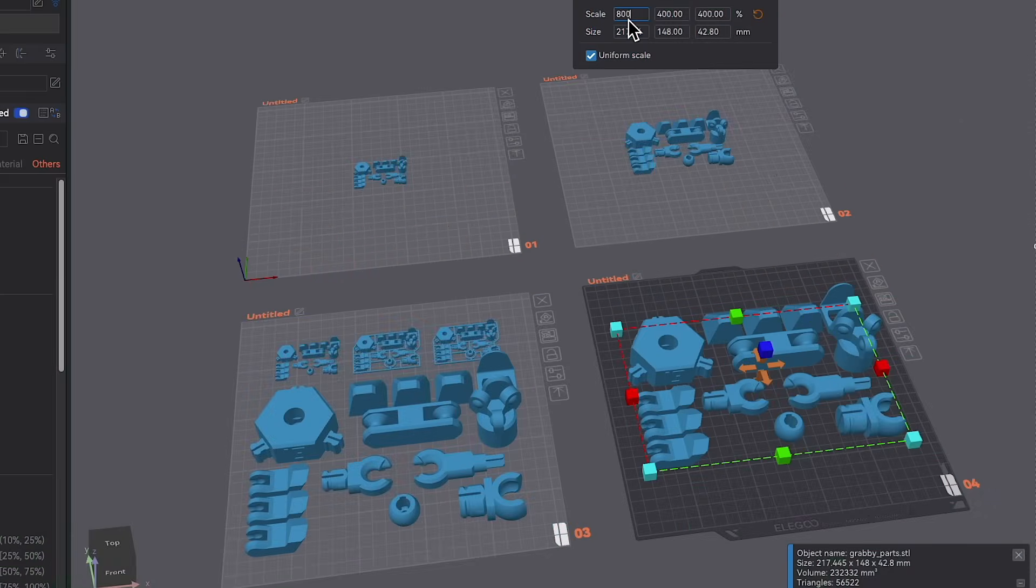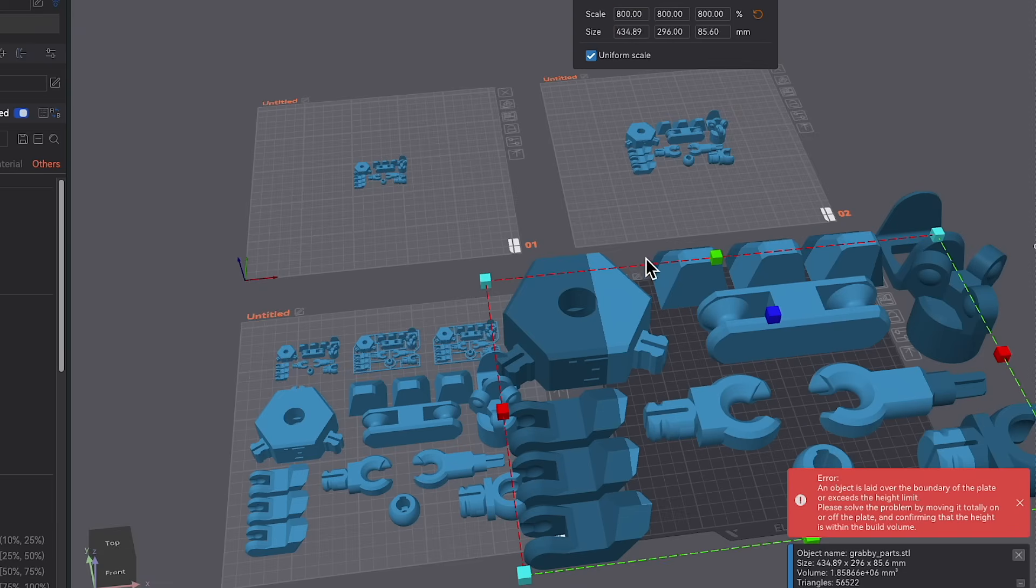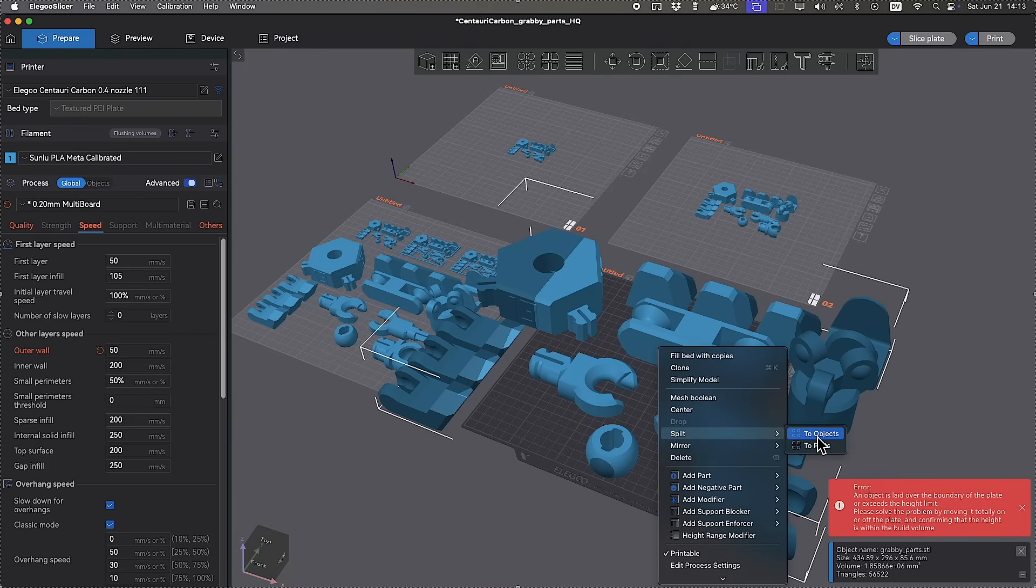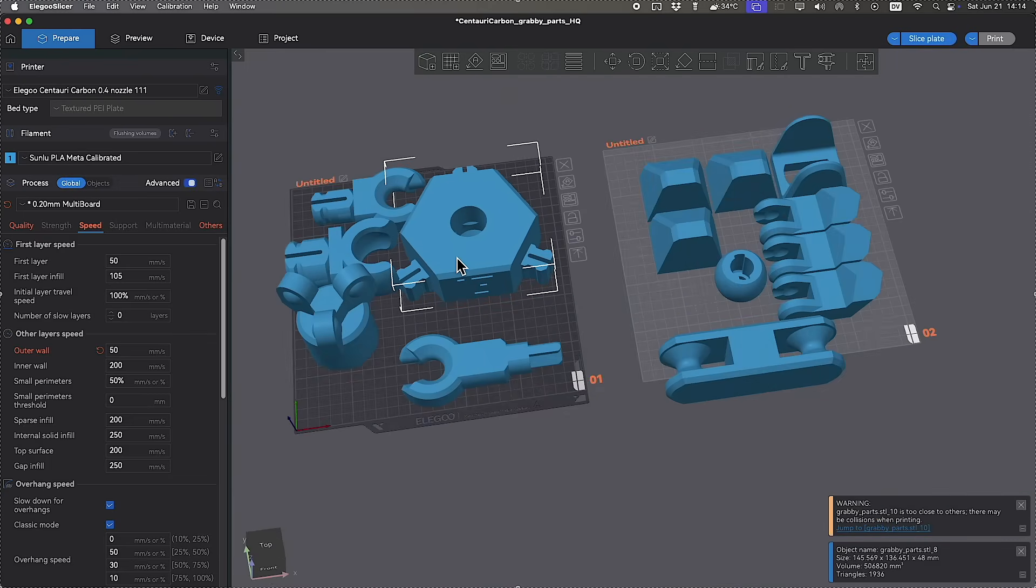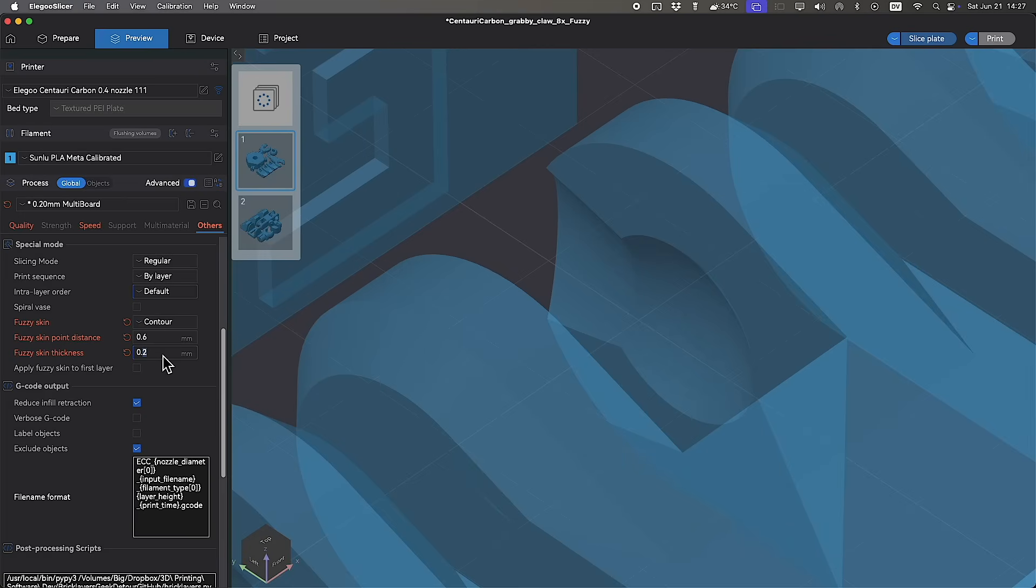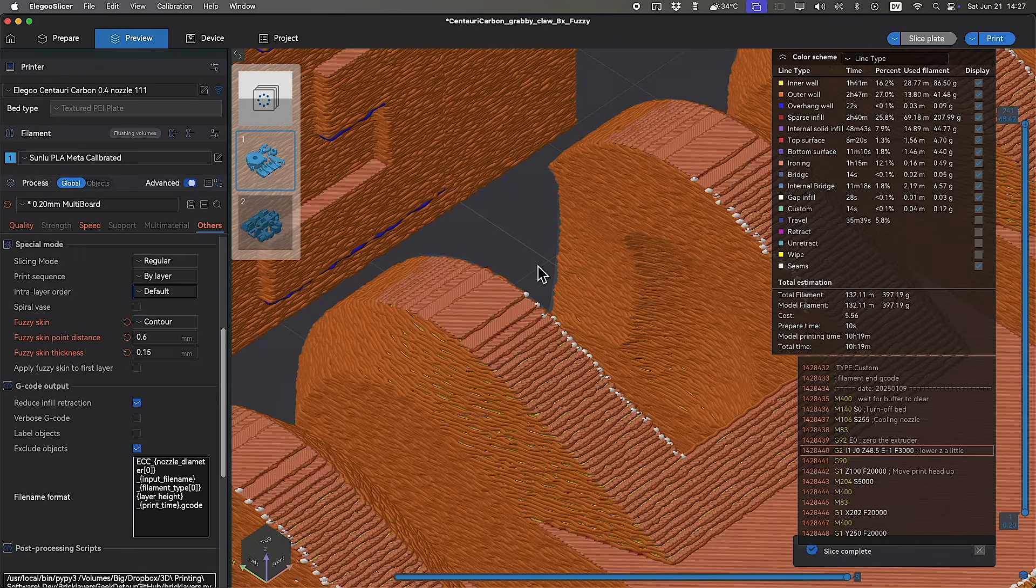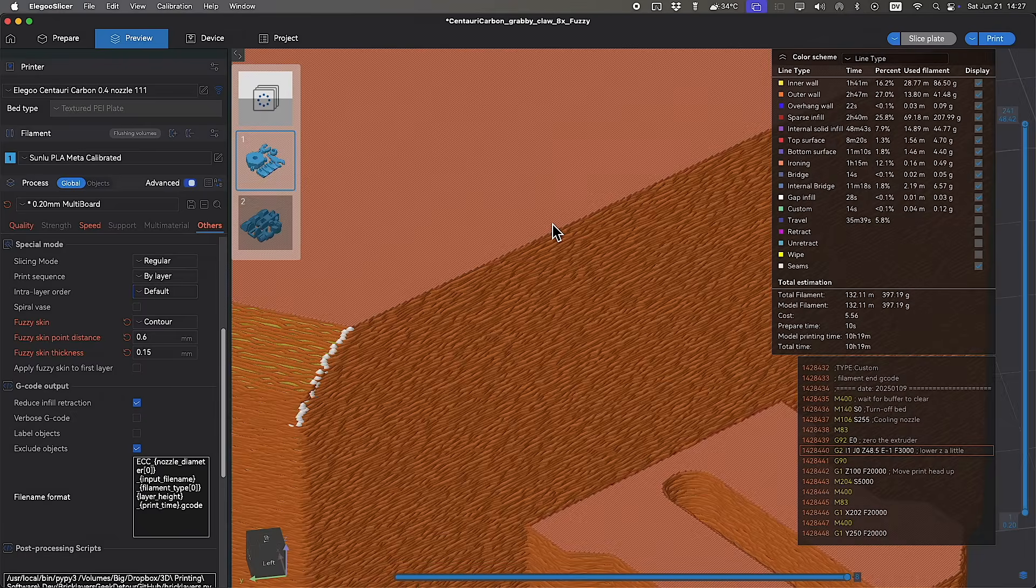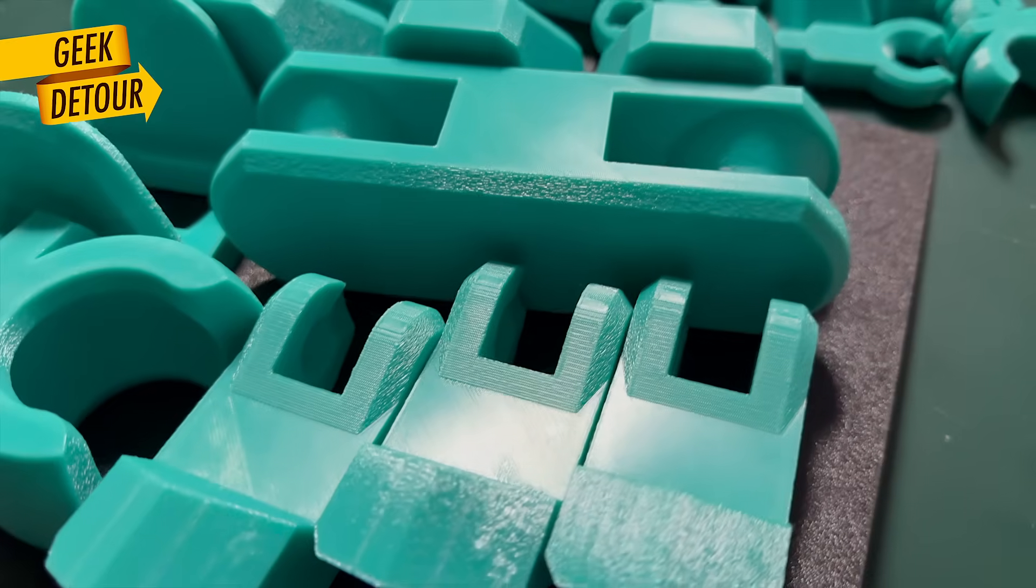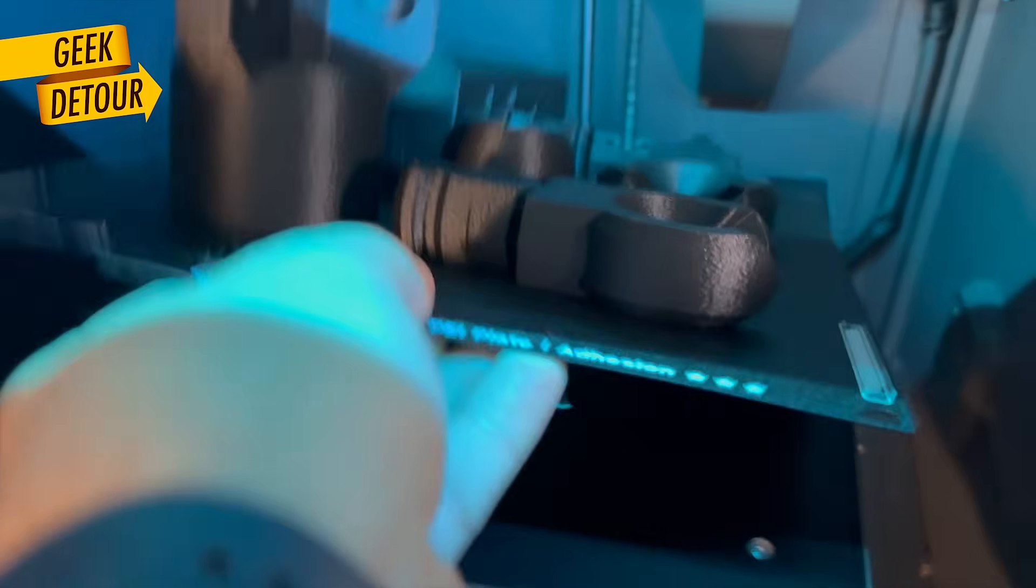Level 8. Now it doesn't fit one build plate anymore. I have to break the model apart and fit the parts in two build plates. Just for fun, let's use fuzzy skin. And I'll print half of the parts in green and the other half in black.